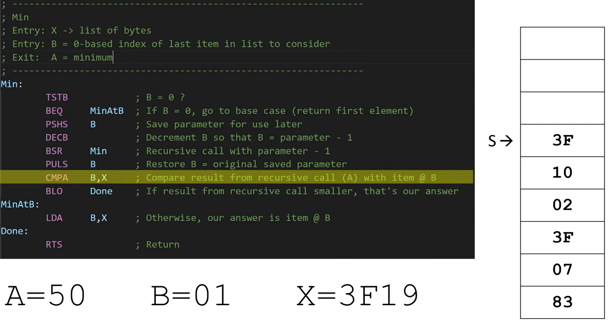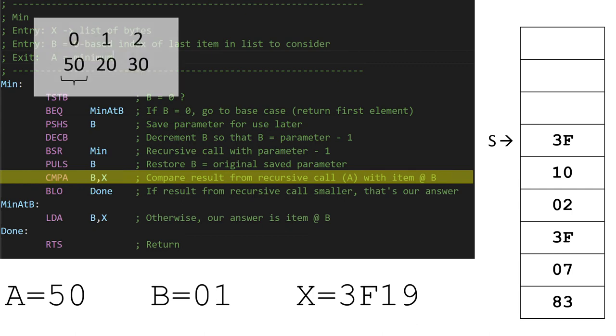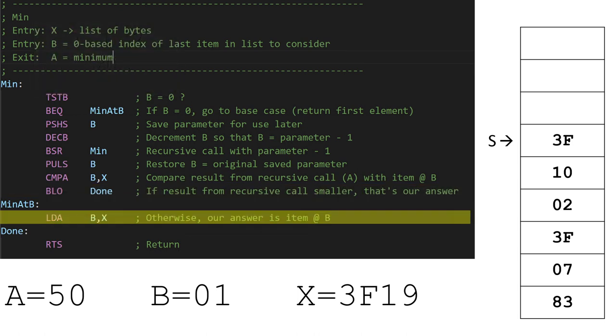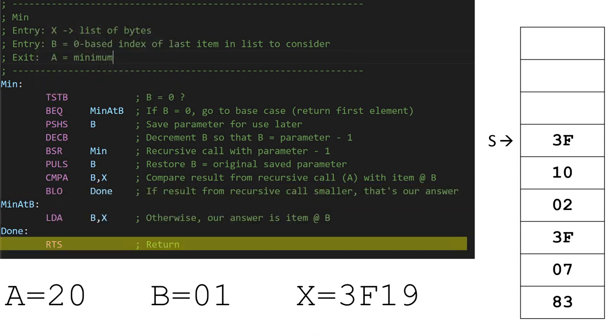We can now compare what the recursive call just returned, which is 50, with the item at slot 1, which is 20. 20 wins, so we fill A, which is our result, with 20, and return.